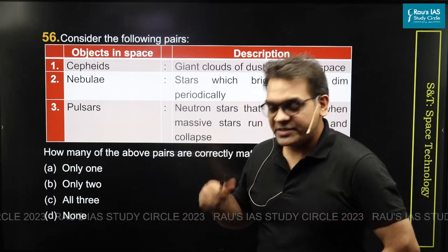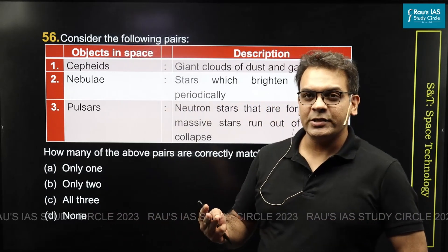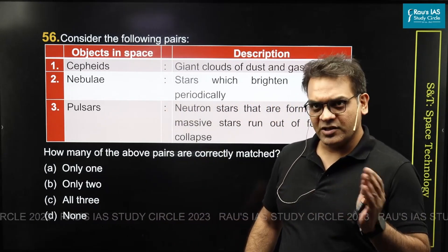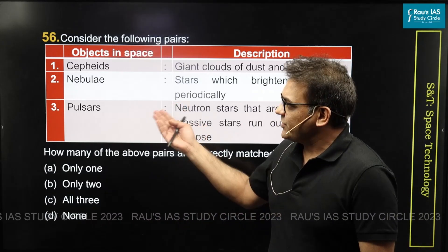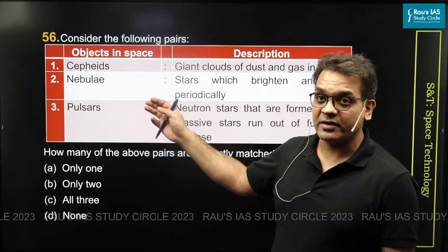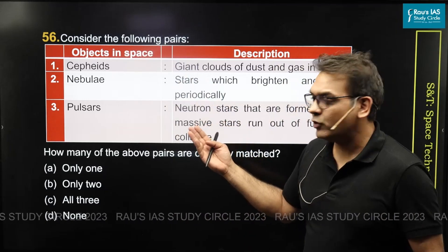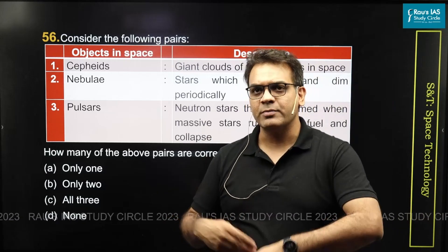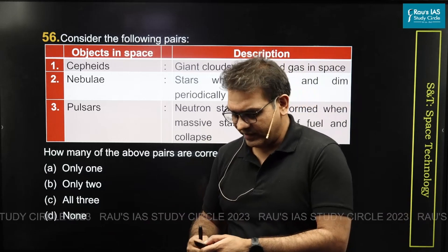Coming to question number 56, it is on terms related to space technology. Often you can see questions related to terms in space technology. The question is about pairing — whether the terms are rightly paired. It talks about cephides, nebula, and pulsars. These are the terms you often hear in news; you keep hearing about pulsars in the newspapers. Nebula, of course, is a very basic term.